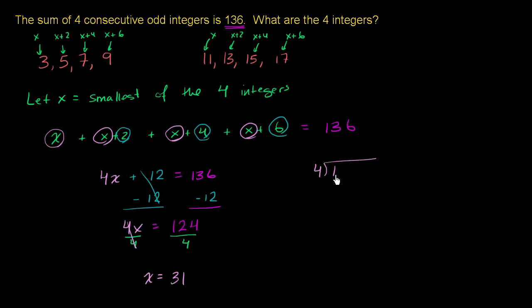And if you don't feel like doing that in your head, you could also do traditional long division. 4 goes into 124. 4 doesn't go into 1, 4 goes into 12 three times. 3 times 4 is 12, you subtract, bring down the next 4. 4 goes into 4 one time, you get no remainder.